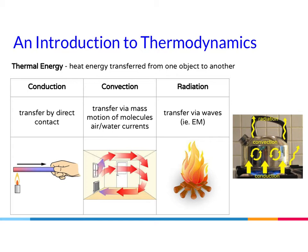Now let's shift from chemical energy to thermodynamics and thermal energy — heat energy transferred from one object to another. There are three types of heat energy transfer: conduction, convection, and radiation. Conduction is transfer by direct contact. As shown in the image, a Bunsen burner heats a metal rod, and that heat is directly touching the person — coming into direct contact with the heat.